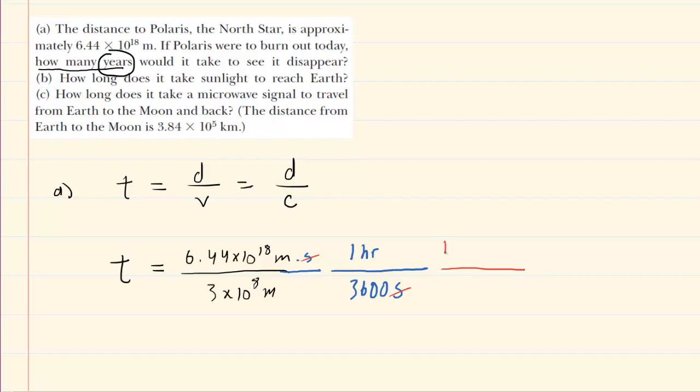We know that one day is 24 hours. If we multiply by that conversion factor, the hours would cancel and we would be left with days. Finally, to get it into years, we know that one year is about 365 days.